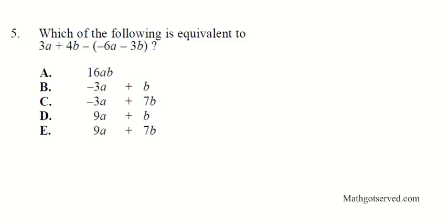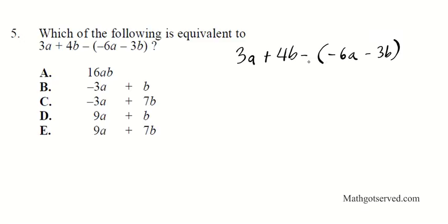Question 5 asks which of the following is equivalent to 3a plus 4b minus the quantity 6a minus 3b. We have 3a plus 4b minus (6a minus 3b). We need to resolve the parenthesis first — following order of operations, parentheses come first. We can imagine a negative 1 in front of the parenthesis, and distribute it.